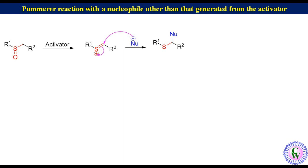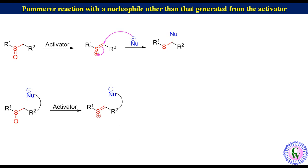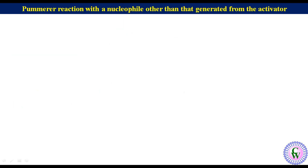In the second case, where the nucleophile is from the substrate itself, the general structure of the molecule can be represented accordingly. In the presence of an activator, the sulfoxide group forms an electrophile, and then there is an intramolecular attack by the nucleophile to produce a cyclic product with an exocyclic sulfide group.